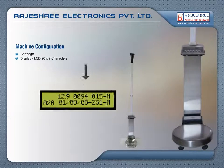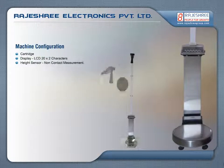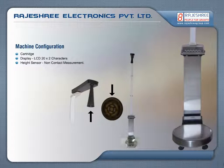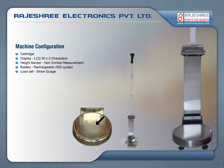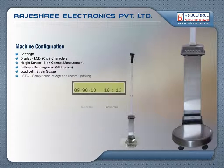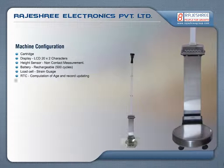The machine configuration includes: an LCD display of 20×2 characters; a non-contact measurement height sensor; a rechargeable battery with 500 charge cycles; a load cell strain gauge; and an RTC (Real Time Clock) for computation of age and updation of data. The system is also RTC tamper-proof.